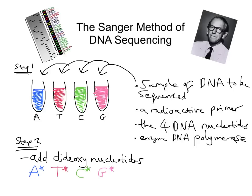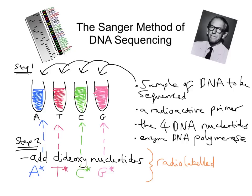These are special modified versions. We're going to put A* into tube A, T* into tube T, C* into tube C, and G* into tube G. The dideoxynucleotides are present at about 1% of the concentration of the normal nucleotides, so only a very small amount is added. That's really important to remember. And just to say again, these are radio-labelled or radioactive.